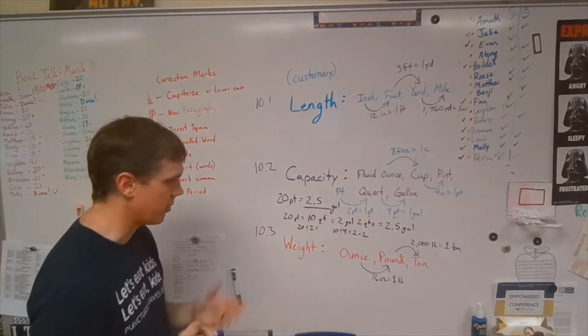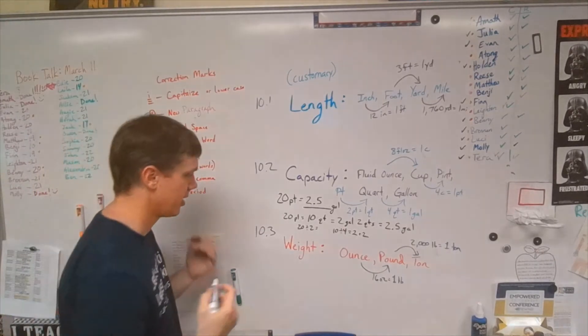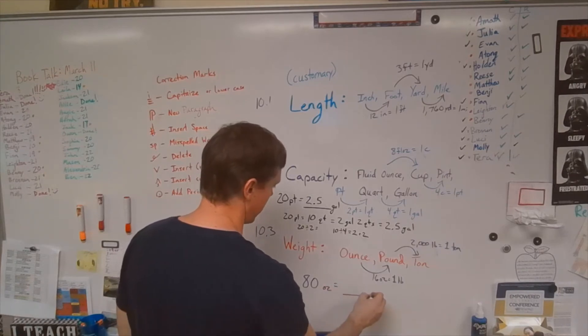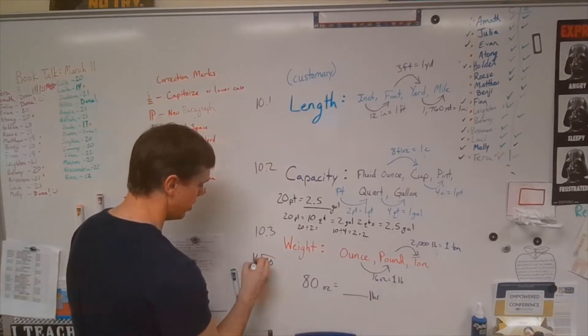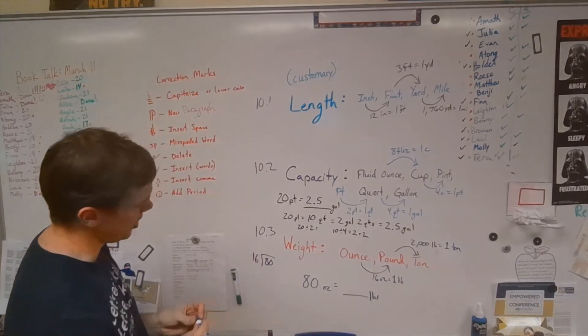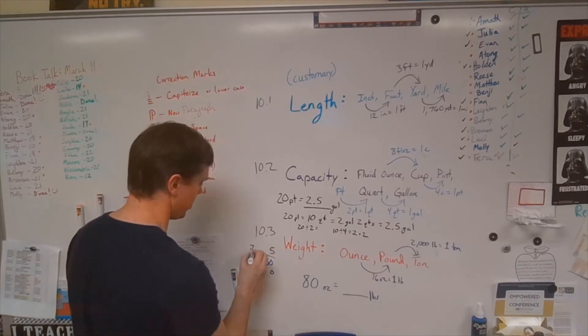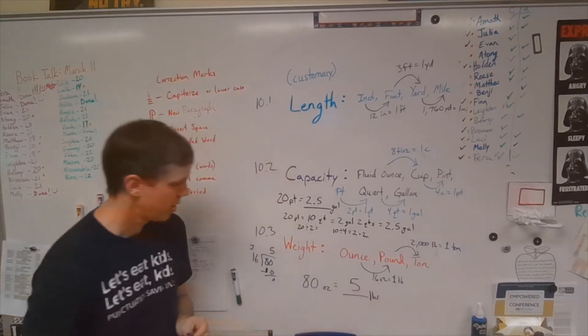So again, you know, because there's only three of them, it'll probably be a lot more straightforward on this one. You might have something like, you know, you have 80 ounces equals how many pounds and you'll just divide 80 by 16. So 80 divided by 16, 16 is going to go into 80. Oh, it goes in perfectly five times. Five times six is 30. Five times one is five plus three is eight. So that's going to be five pounds. Okay. Pretty straightforward.